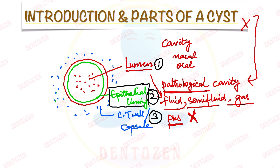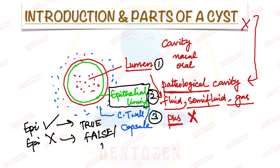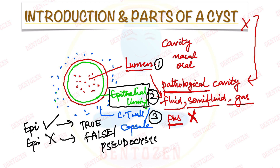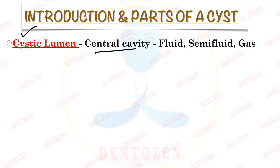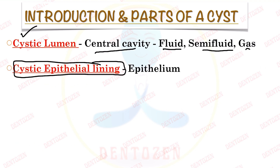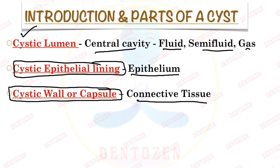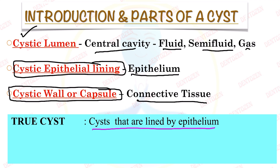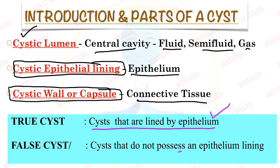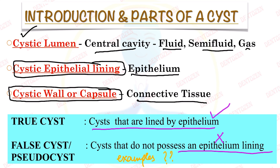The epithelial lining can be present or it may be absent. The cysts in which the epithelial lining is present are called true cysts. The cysts in which the epithelial lining is absent are called false cysts or pseudocysts. To quickly revise: the three parts of a cyst are the cystic lumen (the central cavity containing fluid, semi-fluid, or gas), the cystic epithelial lining made up of epithelial cells, and the outermost cystic wall or capsule made up of connective tissue. You will also get a viva question on examples of true cysts and false cysts, which we will see later in this video.